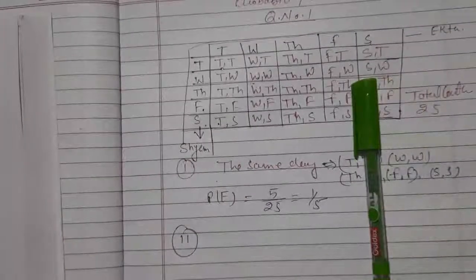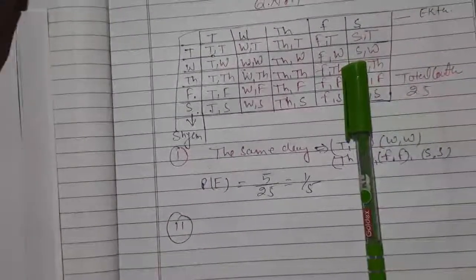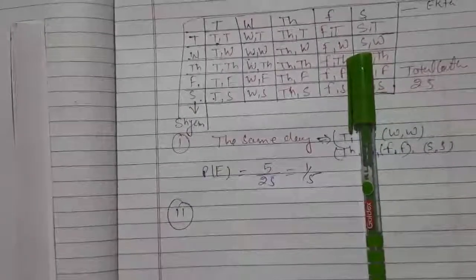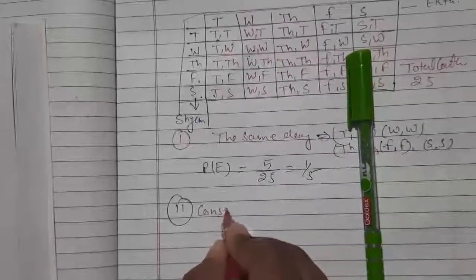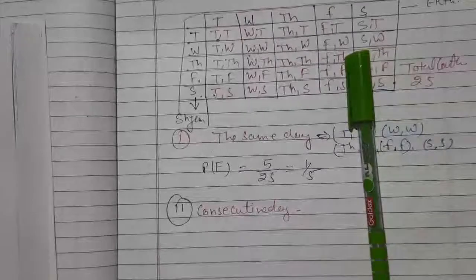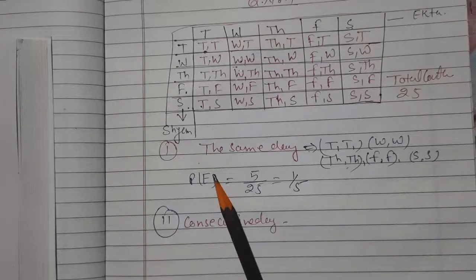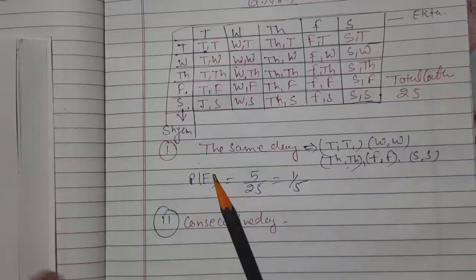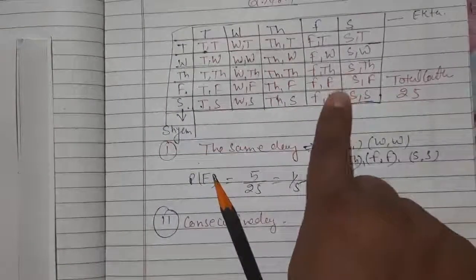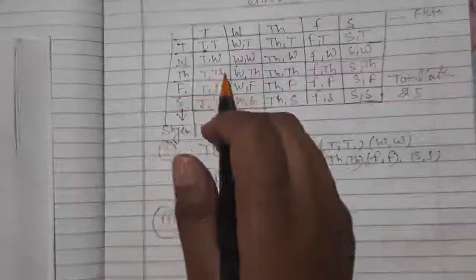Second part: consecutive day. Before counting consecutive day outcomes, let's understand the concept. If one person comes on Tuesday, the other comes on Wednesday. If one comes on Wednesday, the next comes on Thursday. If one comes on Thursday, the other could come on Wednesday. So the pairings go like Tuesday-Wednesday, Wednesday-Tuesday, Thursday-Friday, Friday-Thursday, and so on. We will count our total outcomes for consecutive days.